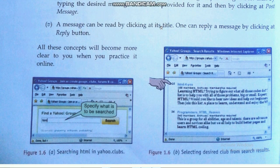Once we became a member, we could post messages by clicking post and typing the desired message in the box. A message can be read by clicking at its title. One can reply to a message by clicking the reply button — like what we are doing nowadays in WhatsApp. These concepts will become clearer when we practice online. Through Yahoo Messenger we can type messages and select the desired club to join.